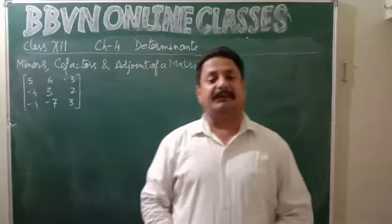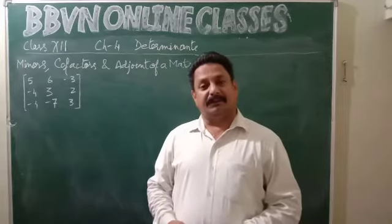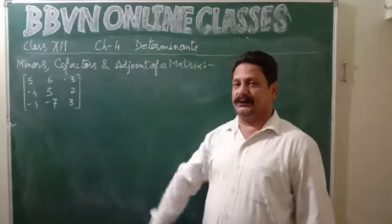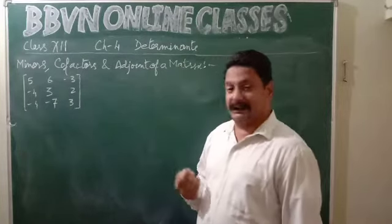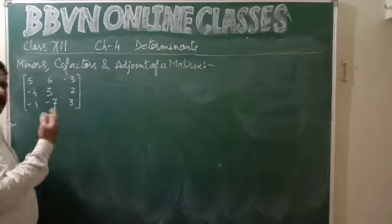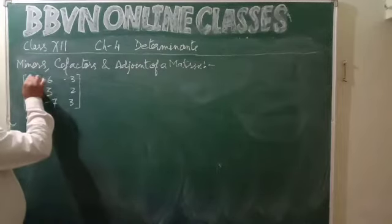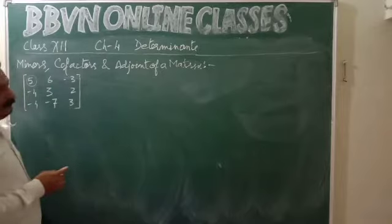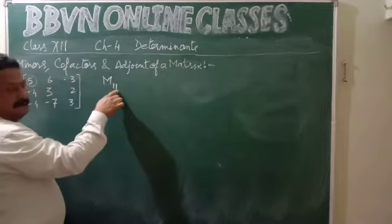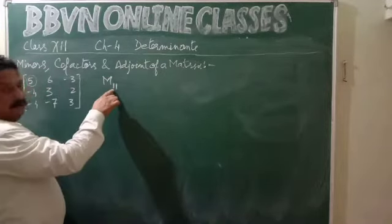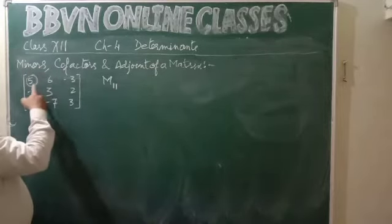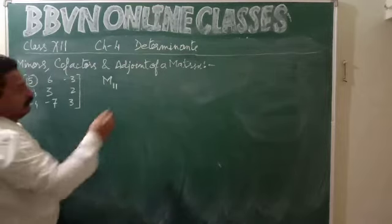Good morning class 12, welcome back. We are in chapter number 4, Determinants. Today we will discuss minors, cofactors, and adjoint of a matrix. Let's first understand what is a minor. For every element in a matrix or determinant, there exists a minor. Minor M11 refers to the first row, first column, and represents the minor value of element A11.